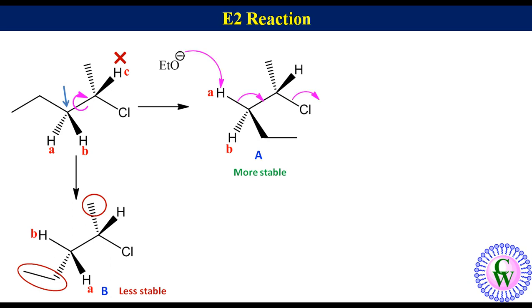The ethoxide ion will abstract HA, and at the same time, elimination of the chloro group will give trans-2-pentene as the major product.